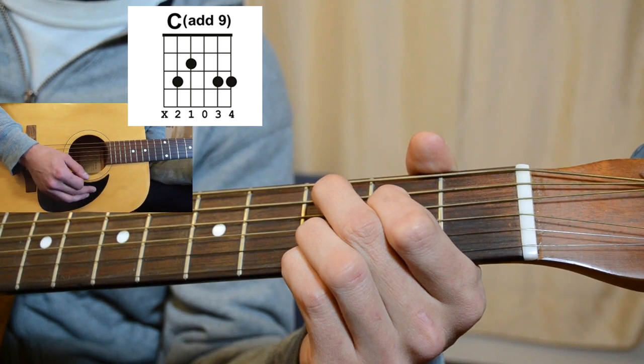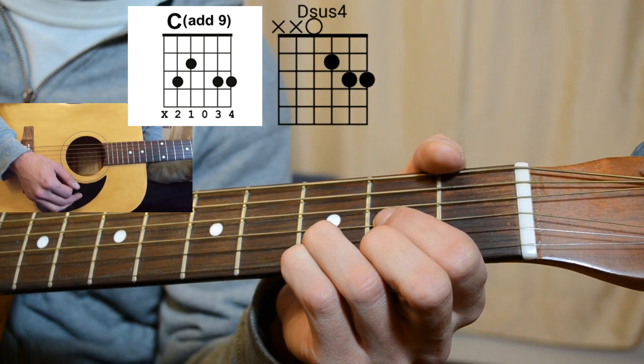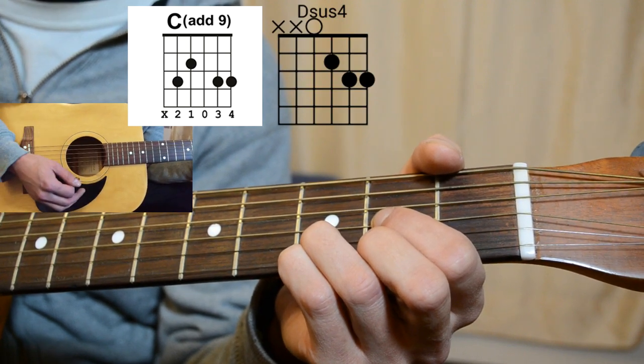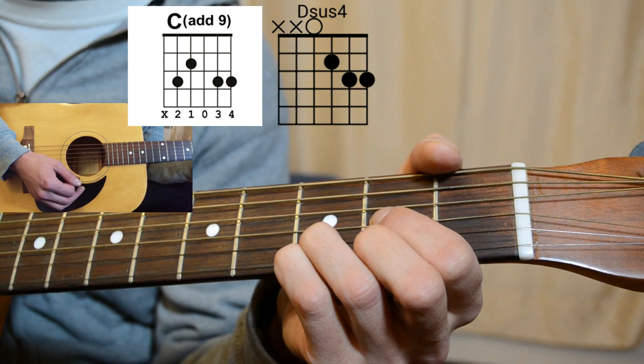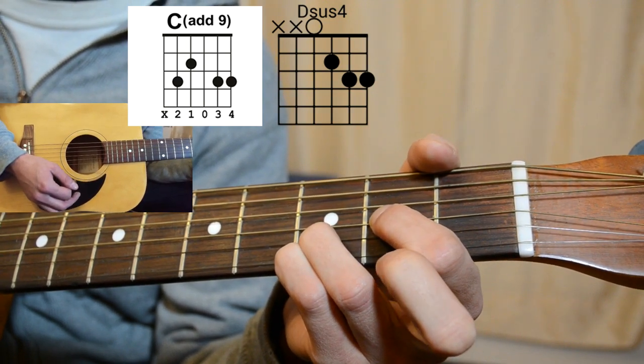So your C add 9 and we're going to go to our D sus 4. It's called a D sus 4. I play it like a regular D and I just put my pinky down there. You could technically take your middle finger off, it wouldn't really matter. It would have the same sound.